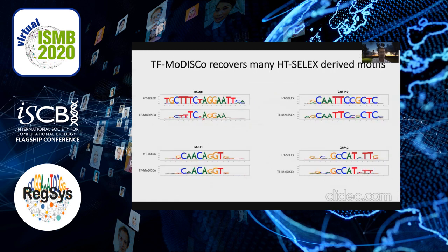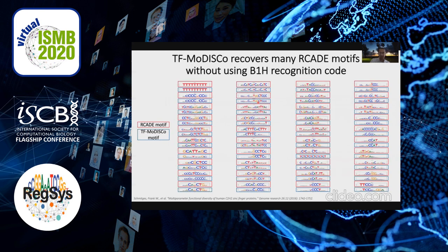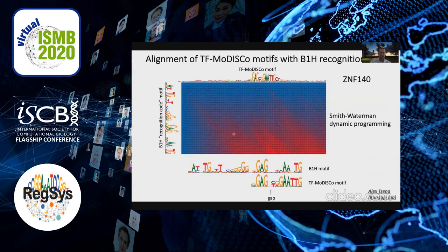What I've shown here are comparisons to gold-standard motifs from HT-SELEX, and you see that we do really favorably compared to the HT-SELEX motifs. We also compared to previous in vivo motif discovery methods such as Arcade, and we generally find that we can recover the Arcade motif with at least one of our motifs. So we then tried to understand what we can do beyond these previous methods.